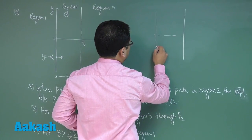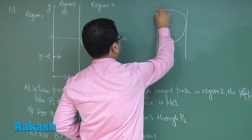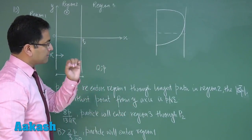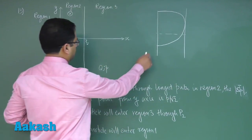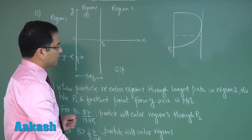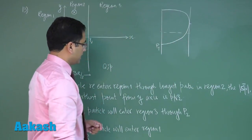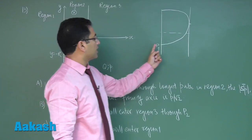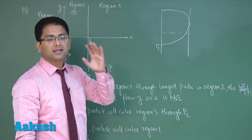It enters from here so it would go something like this. The change in momentum magnitude, delta p magnitude, between p1 (the point of entry that's here) and farthest point from y axis (the farthest point from y axis would be this) is p by root 2. When the particle re-enters region 1, there are multiple semicircles, this satisfies the longest path.